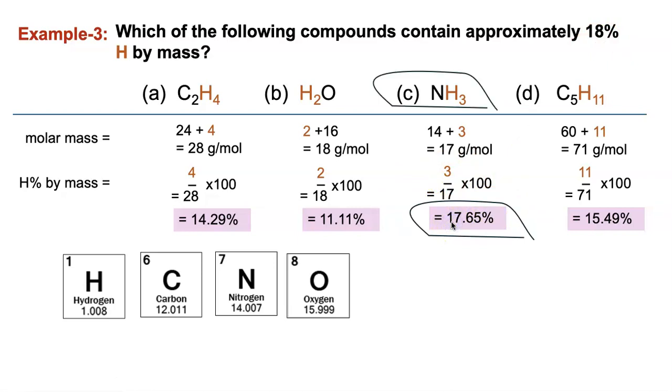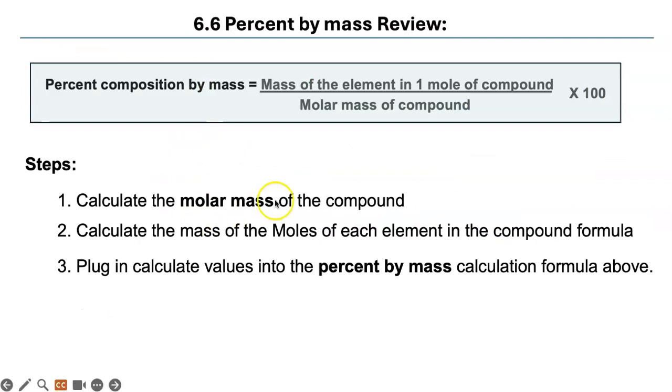That's it. So to review, you have to first calculate the molar mass, then calculate the mass of moles of each element in the formula, and express it as a percentage like this. That's it from me, you can do the exit ticket now.